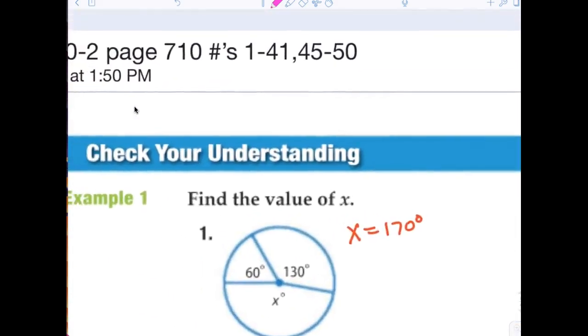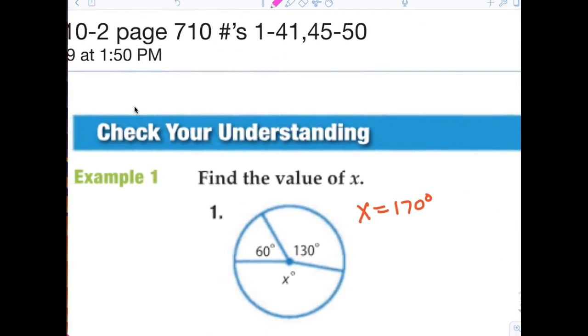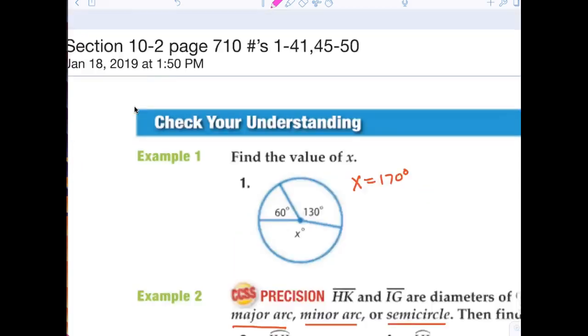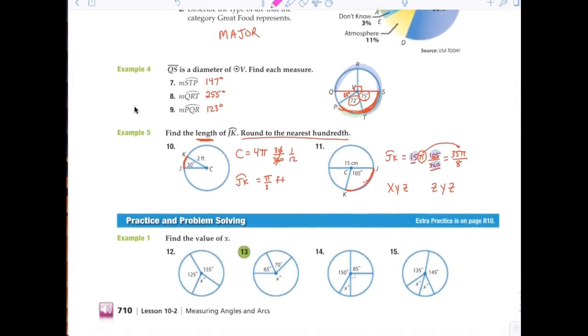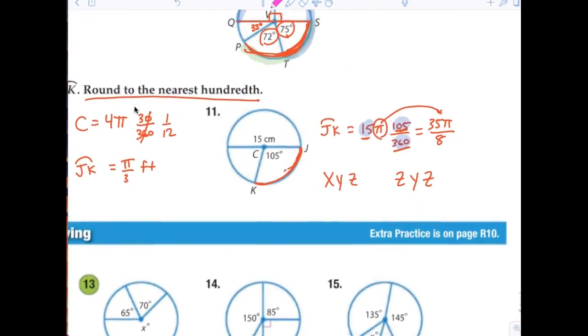Here we go. There you go. 710, 1 through 41, 45 through 50. Yes. Can you get back to 11 for you? Yes, I'll do 11 for you. I don't think I posted the solution yet. Did I? Yes. Okay. Thank you very much.